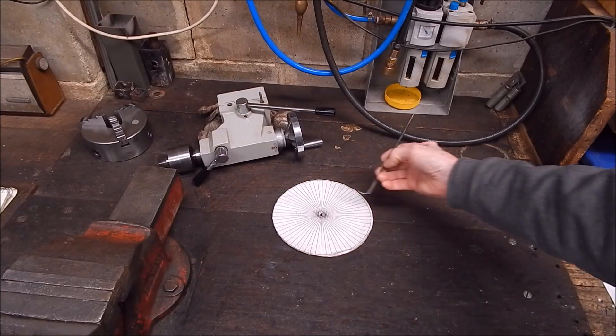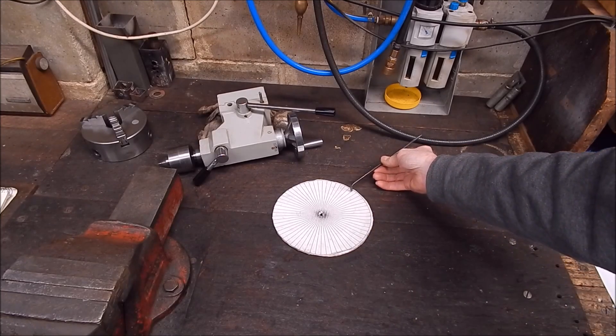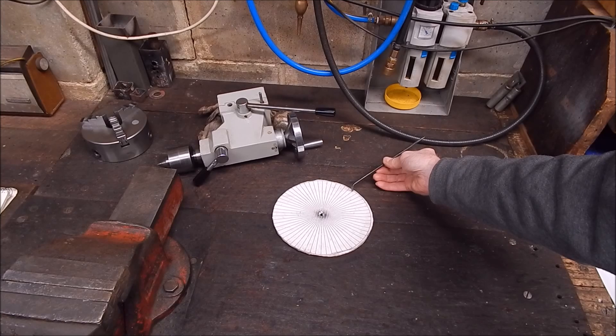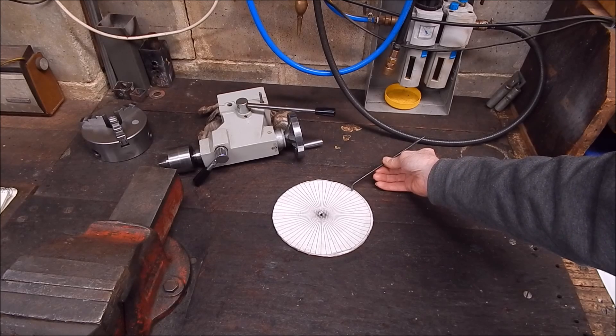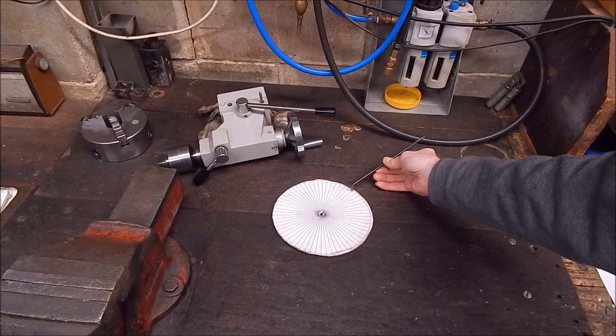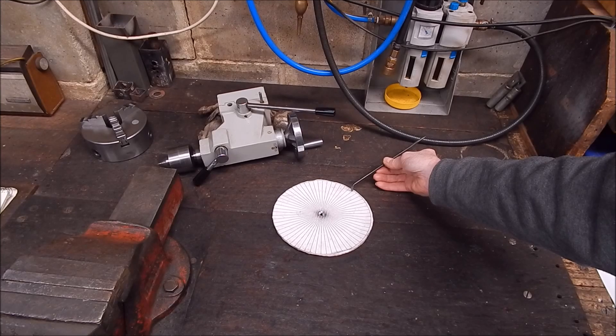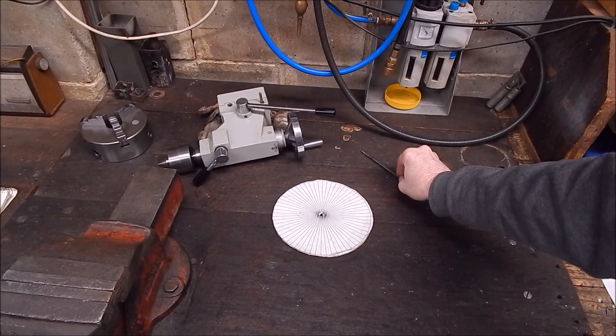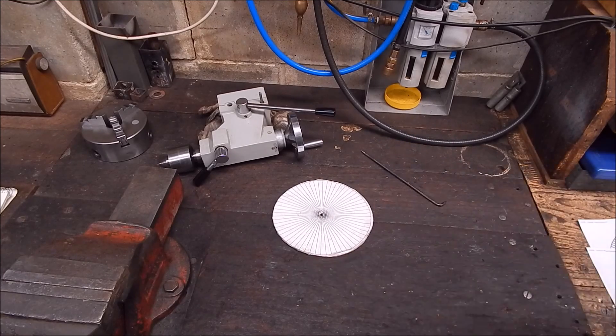You then just use a pointer to align with the indexing disk out near the edge so you get minimum error, and you use that to index the gear blank and cut teeth spaces. Works perfectly accurately provided you align that correctly.